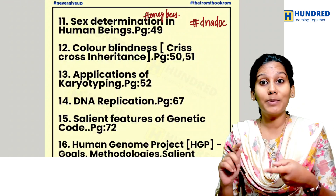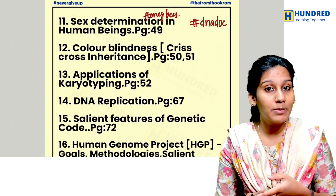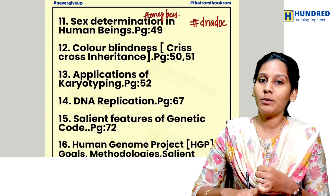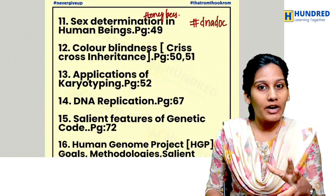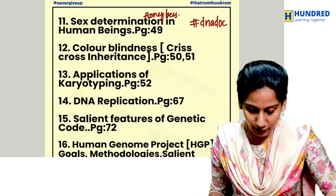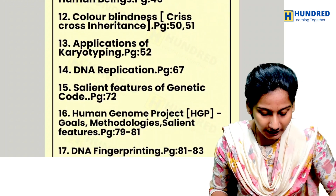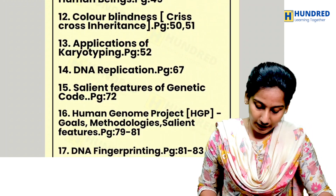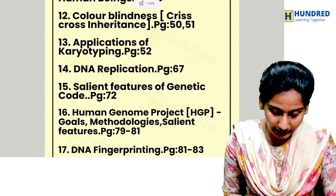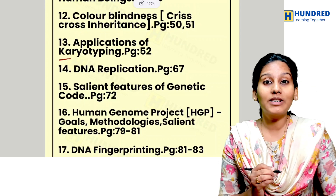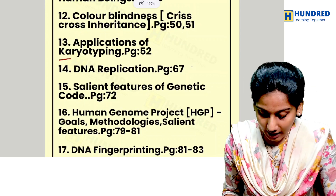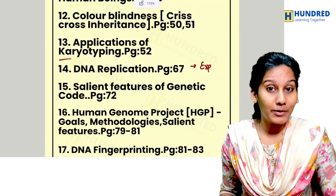Cover color blindness, kin selection — which is important for both 5-mark and 3-mark compulsory questions — and the applications of karyotyping. DNA replication is also key; study the Meselson and Stahl experiment carefully.